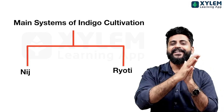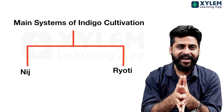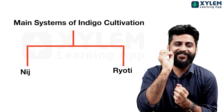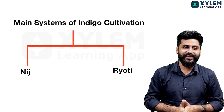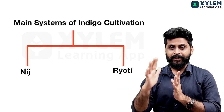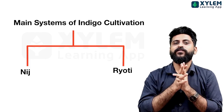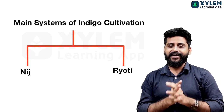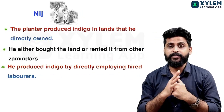Nij Cultivation and Raiyati Cultivation are the two main systems. We learn more about Nij cultivation, but in this class we learn two types of Indigo cultivation: Nij and Raiyati. We learn what Nij and Raiyati are.